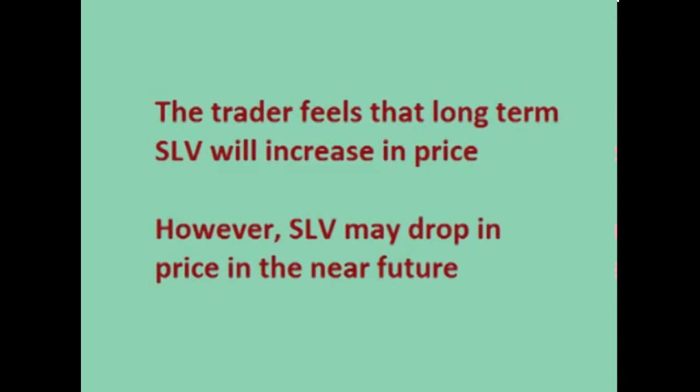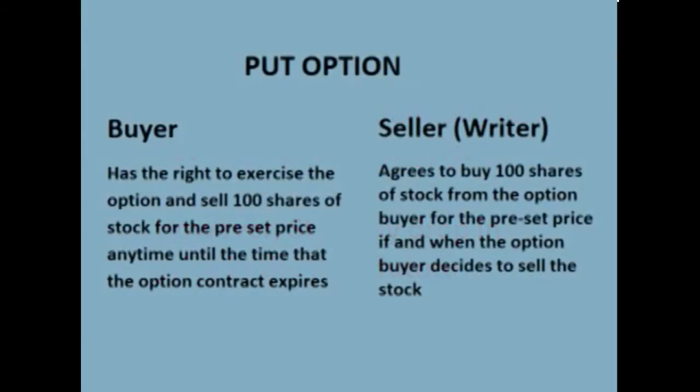This trader feels that SLV will increase in value long term so he doesn't want to sell it. However, he is concerned that the price of silver may make a big drop in price sometime in the near future for some reason, such as some economic news due to be released soon. To protect his position, he buys a put option that expires in one month as an insurance policy. This put option allows him to sell the stock for $18 anytime between the time the option was purchased and the time the option expires a month later. He pays $0.33 per share to do this, for a total cost of $33 plus commissions.